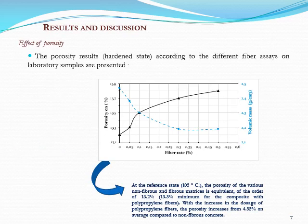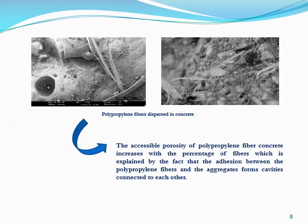The results show that in the reference state at 105°C, the porosity of the non-fibered and fibered composites is equivalent, on the order of 30.2 percent. It is certain that the presence of polypropylene fibers in the cementitious composites results in increased connectivity of the pores, and consequently an increase in pore volume. The accessible porosity increases with the percentage of fiber, which is explained by the fact that the interface between the polypropylene fibers and the aggregates forms channels connected to each other.